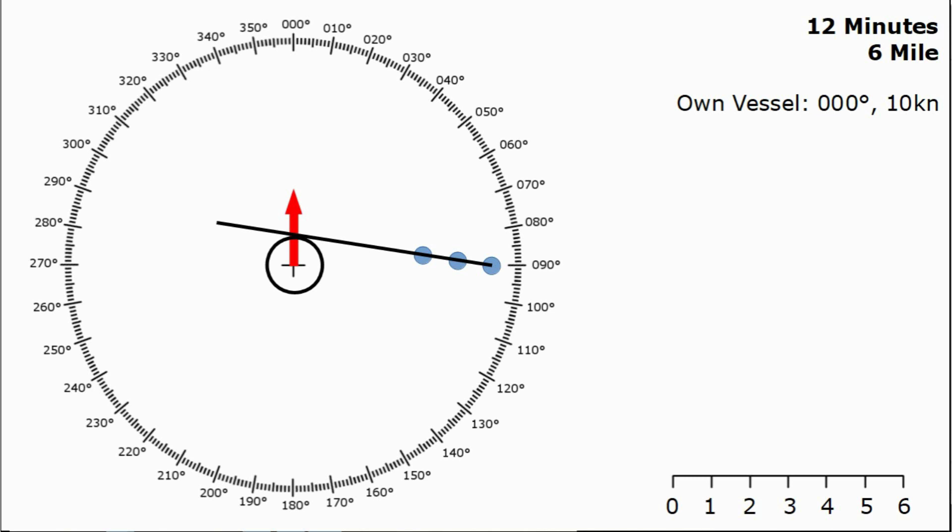We can measure the range from the centre of the ring to that line of approach and that will give us our closest point of approach. Now that point isn't going to be due north or due east, it's actually just going to be perpendicular to that relative line of approach. From that we can simply measure the range that the ring is drawn. In our case we can see it's about 0.7 miles so our closest point of approach is 0.7 miles.